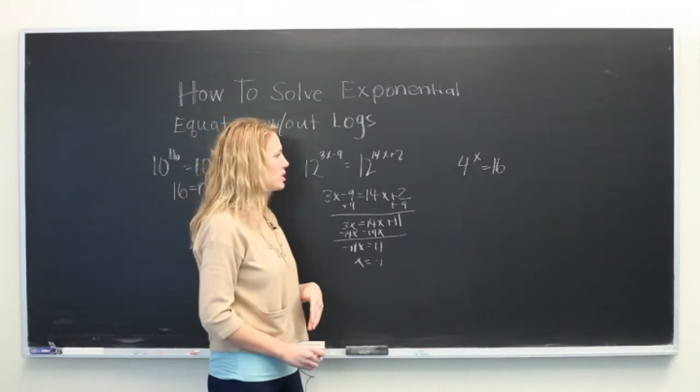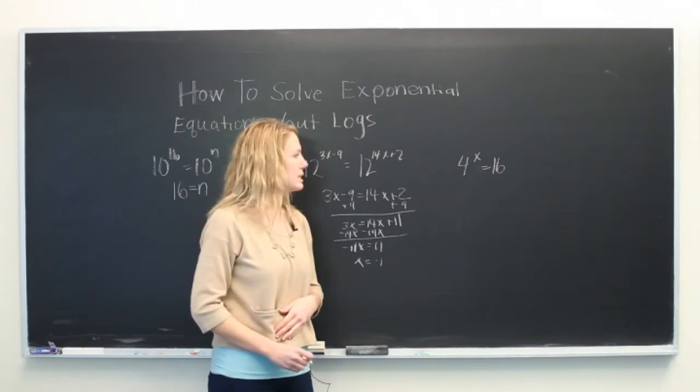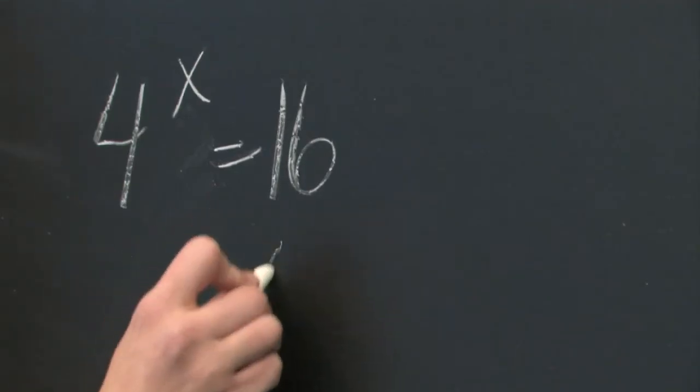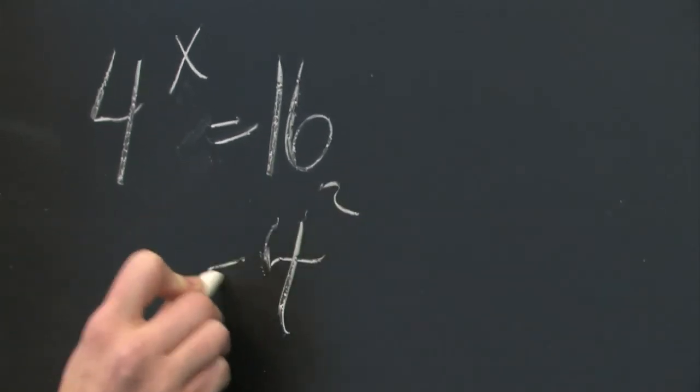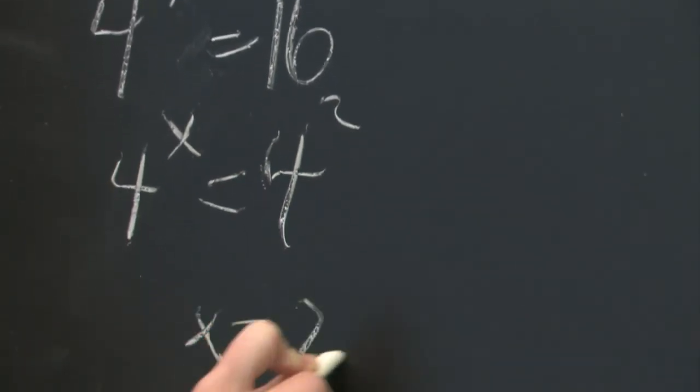So we have 4 to the x power is equal to 16. The way we rewrite 16 with a base of 4 is just 4 squared. So x is equal to 2.